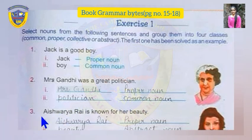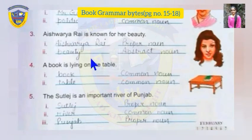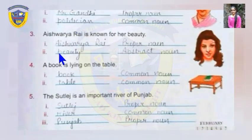In the third sentence: Aishwarya Rai is known for her beauty. In this sentence, Aishwarya Rai and beauty are the two nouns. Aishwarya Rai is the name of a specific person, so it's a proper noun. And beauty is an abstract noun. An abstract noun is something we can't see and can't touch but can only feel, so beauty is an abstract noun.